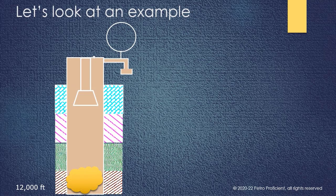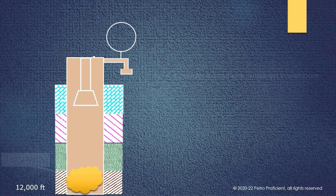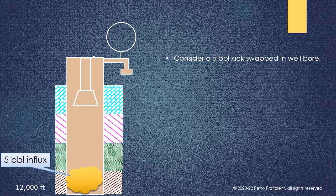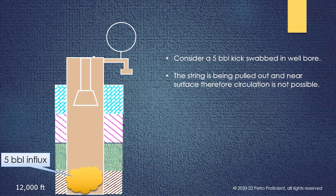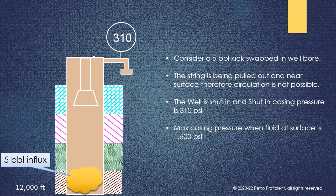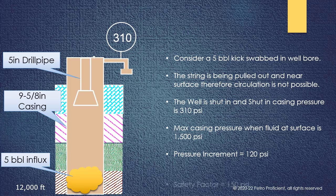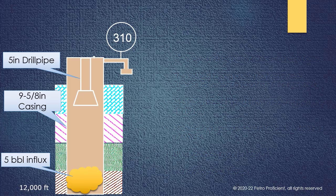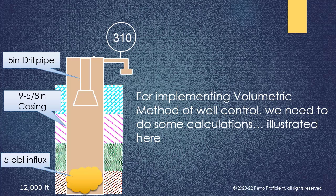Let's look at an example of volumetric method. Consider a 5 barrel kick swabbed in a well bore. The string is being pulled out and near the surface, therefore circulation is not possible. The well is shut in and shut in casing pressure is 310 pounds per square inch. Drill pipe pressure cannot be recorded. Max casing pressure when fluid at surface is 1,500 pounds per square inch, and the pressure increment for gas expansion and bleeding is 120 pounds per square inch. For implementing volumetric method of well control, we need to do some calculations illustrated here. For this example, a 9 5 eighths casing and 5 inches drill pipe has been considered.